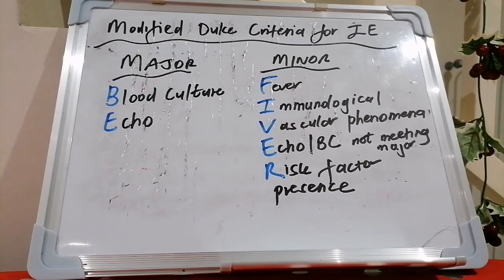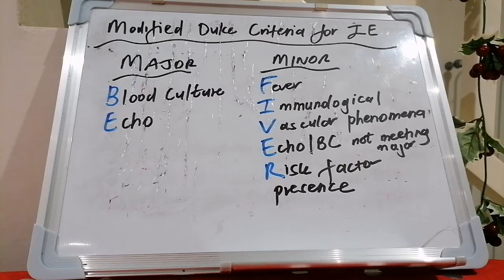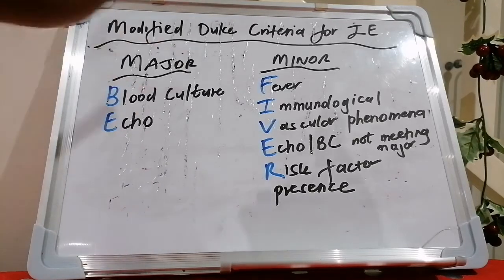Salutations my friends, and I bring warm greetings in the precious name of my Lord and Savior Jesus Christ. Welcome to our 24th mnemonic in internal medicine, and this time we're looking at the modified Duke criteria for infective endocarditis.